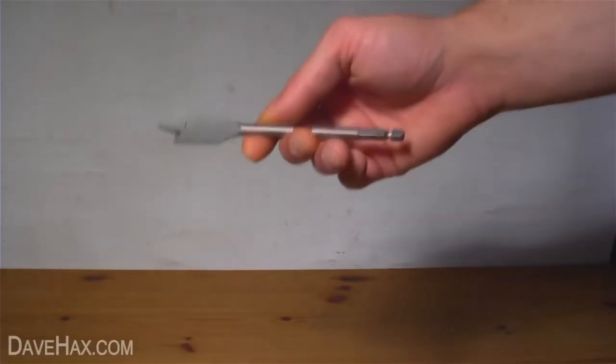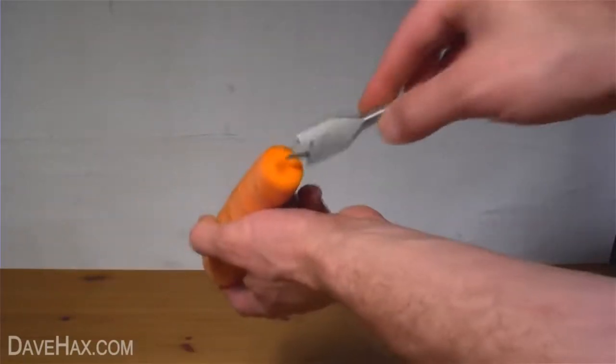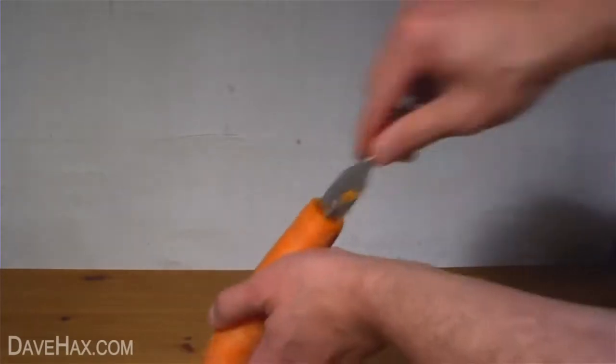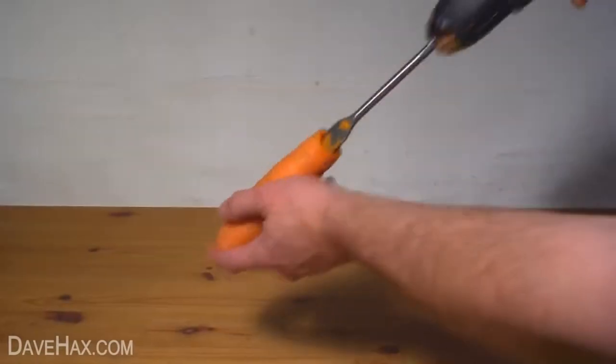Next take a drill bit like this, this one measures 19mm and carefully start drilling into the end of the carrot. You can do this all by hand or if you have an electric drill you can use that.